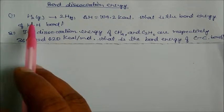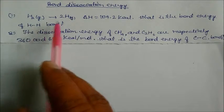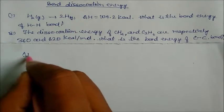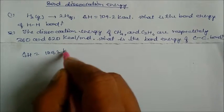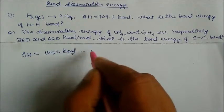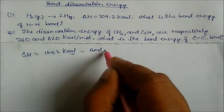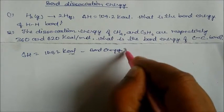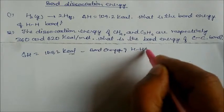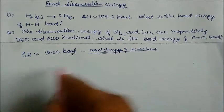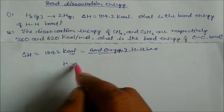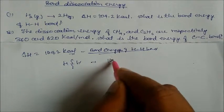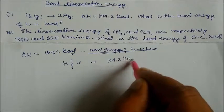Here one molecule is converted into individual hydrogen atoms. So bond energy is delta H, which is 104.2 kilocalorie. This is the bond energy of the H-H bond. When two hydrogen atoms bond with each other, we require 104.2 kilocalorie of energy.